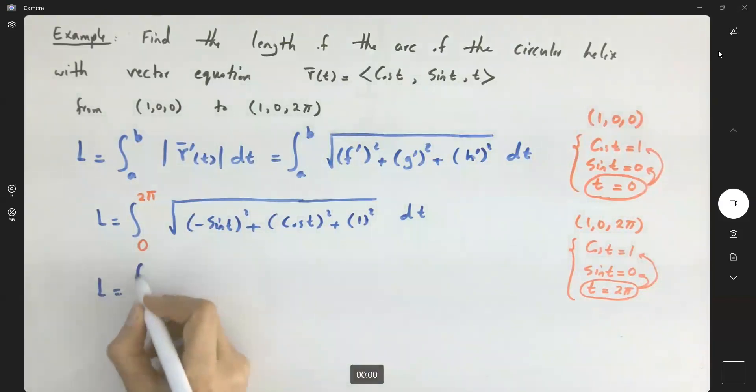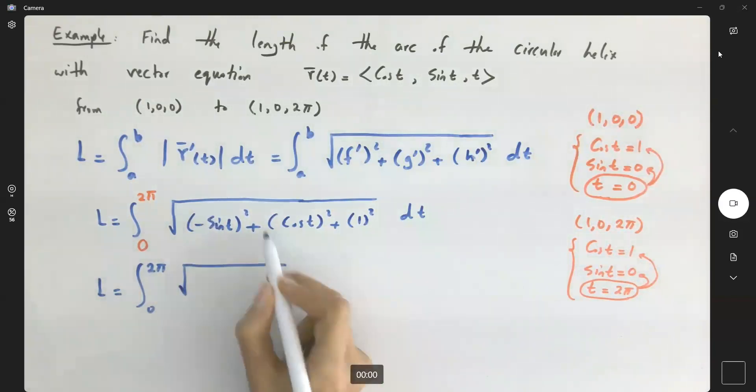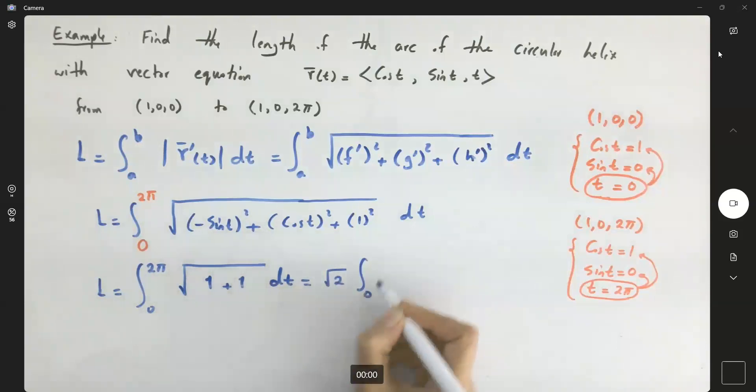Now let's compute this integral from 0 to 2π. Here you have the square root of sine squared plus cosine squared, which is 1, plus another one, dt, which is equal to square root of 2 integral from 0 to 2π dt.